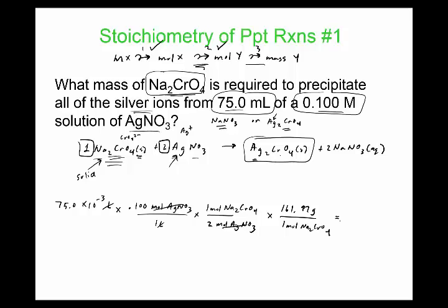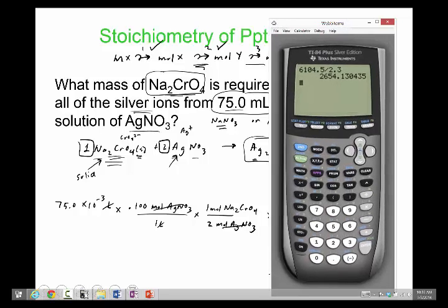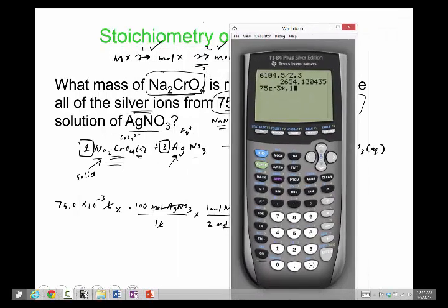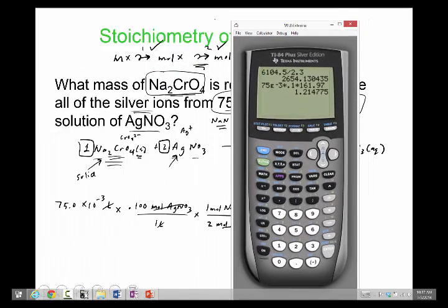Okay, so let me see if I can enter this problem here, so we have 75, 10 to the negative third, times 0.1, times 161.97. And then divide that by two. And we get,